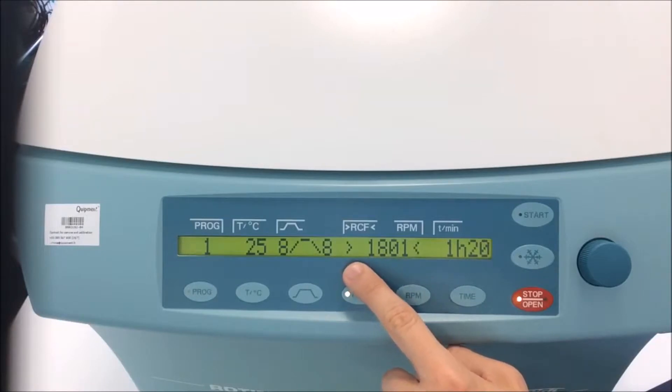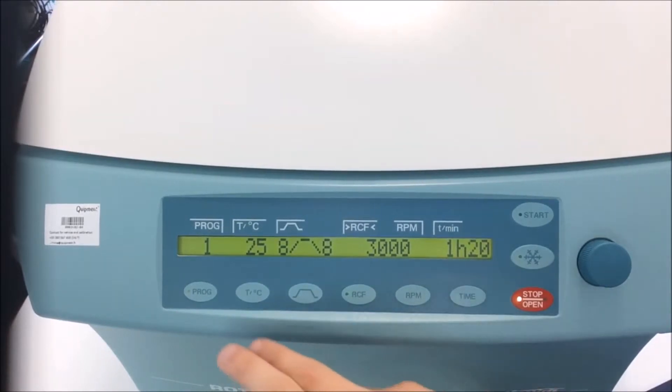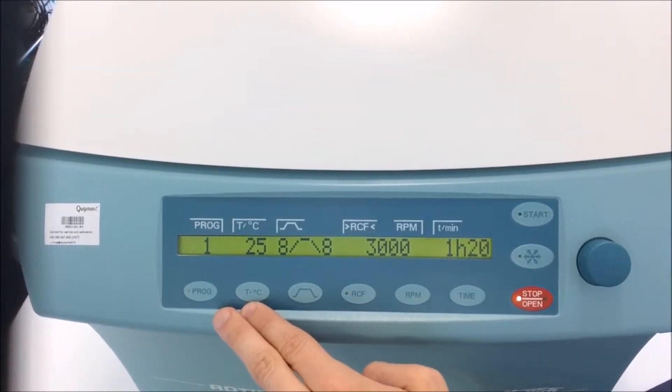My speed in RCF is 1800. I can change it, of course. And the duration of the centrifugation is 1 hour and 20 minutes. Of course, I can change any parameter I want.